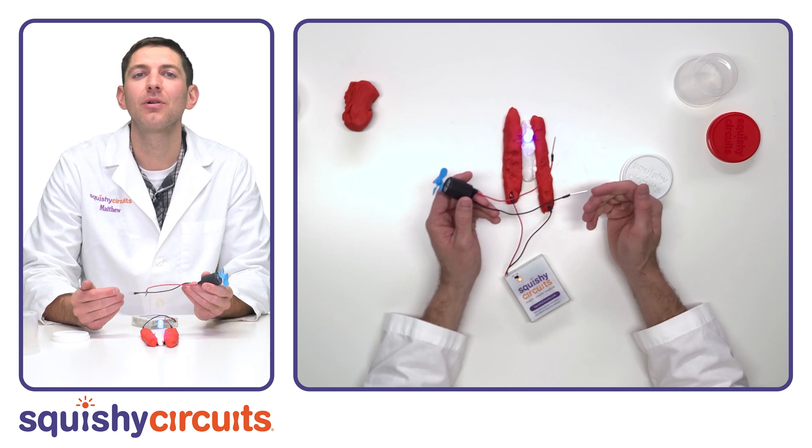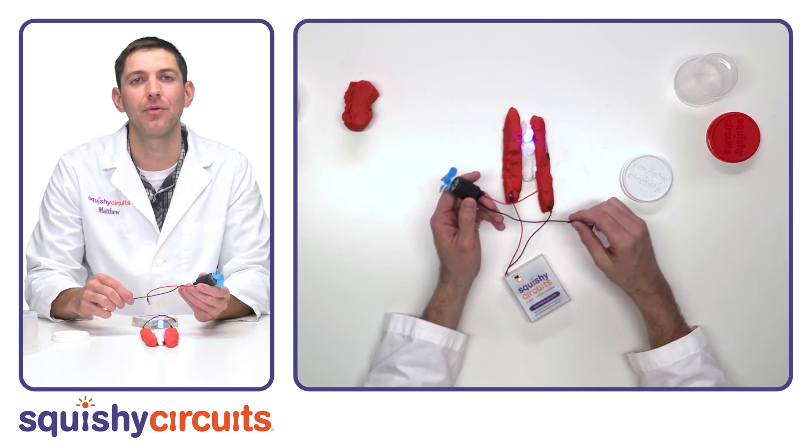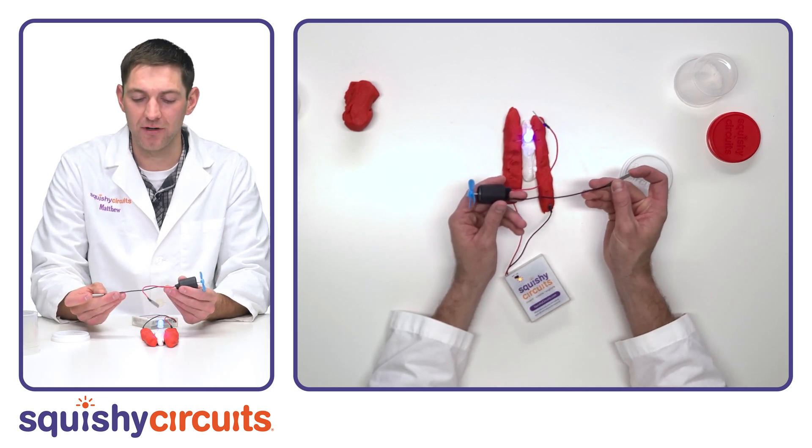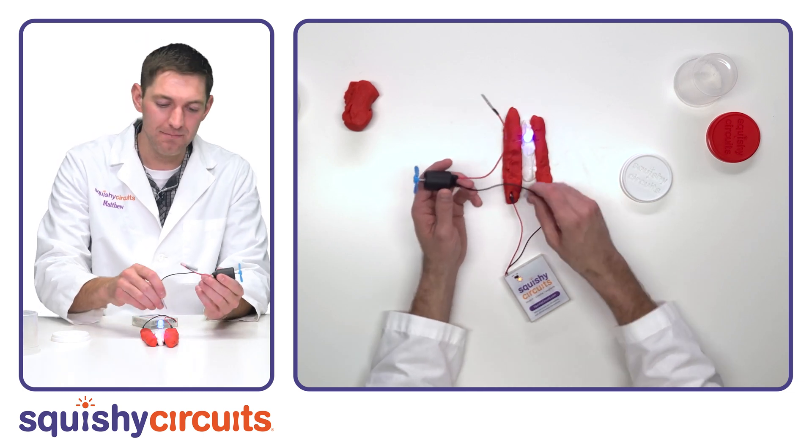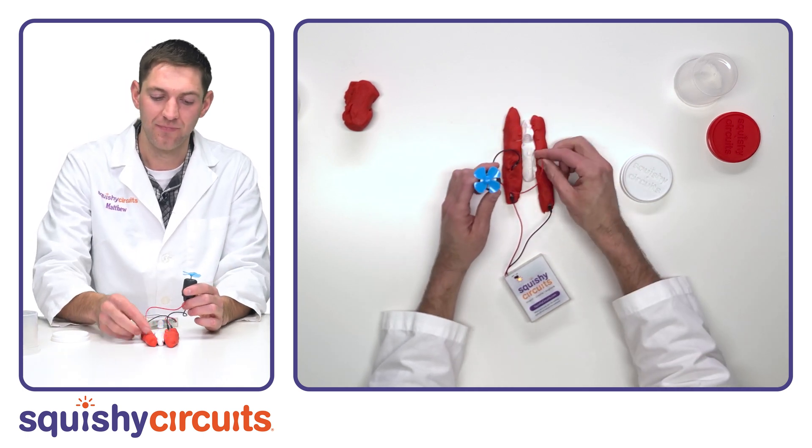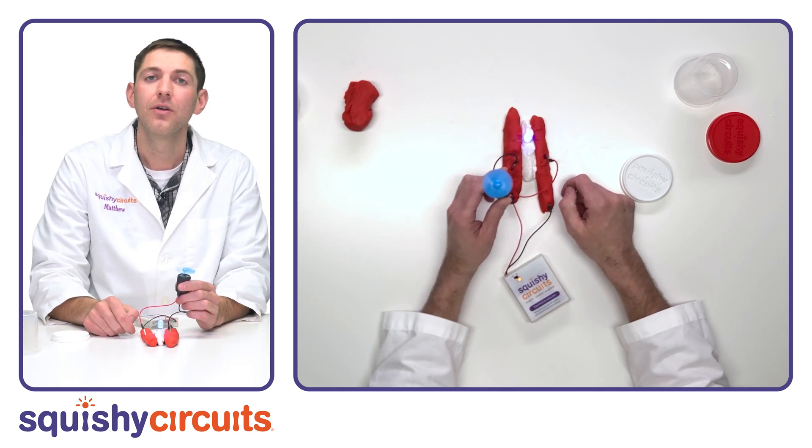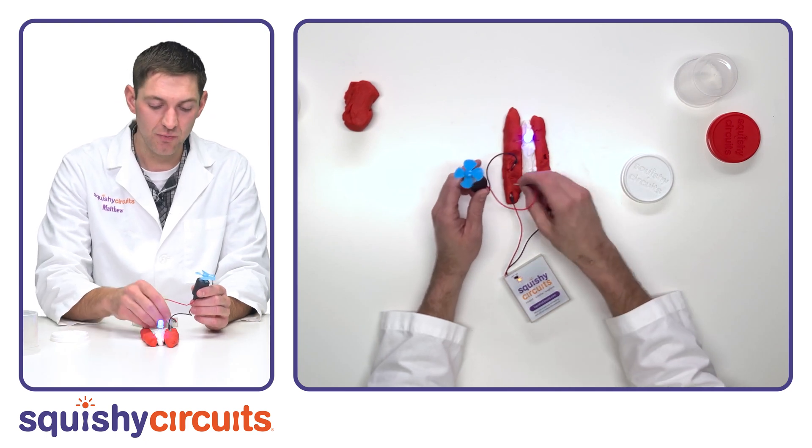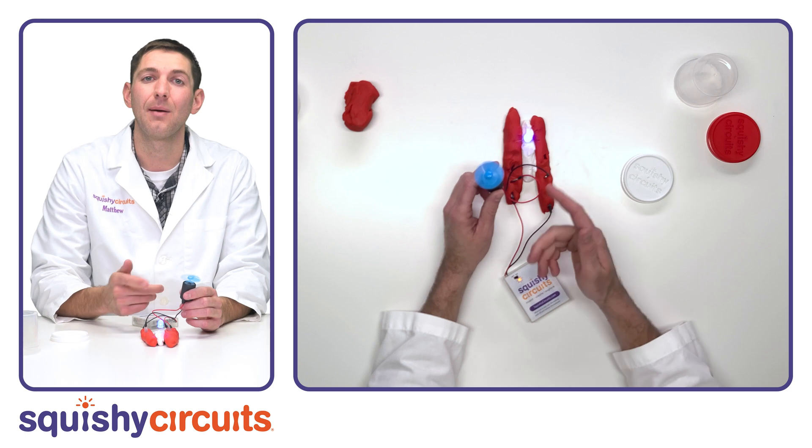Just like the LED, the other components have two terminals because electricity has to flow through something to cause it to operate. These terminals are mounted at the end of the wires, just like the battery holder has. If we add the motor to our circuit, we can add motion to our squishy circuits. You may have to give it a small push to get it started. You'll notice that motors do not have polarity like LEDs, and that if you switch the terminals, it causes the motor to spin in the opposite direction.